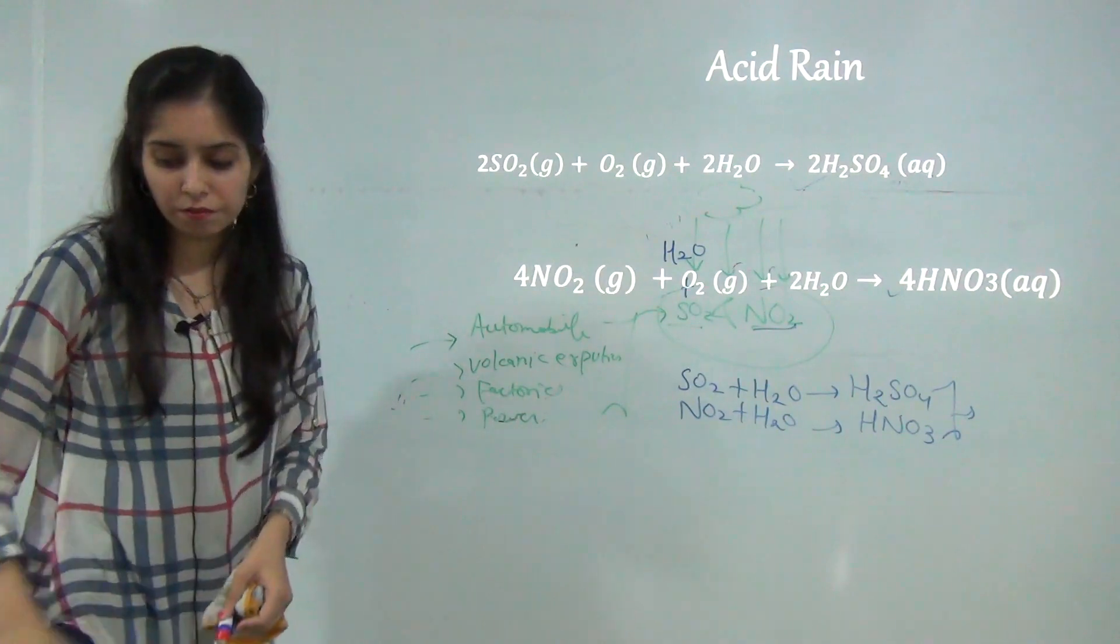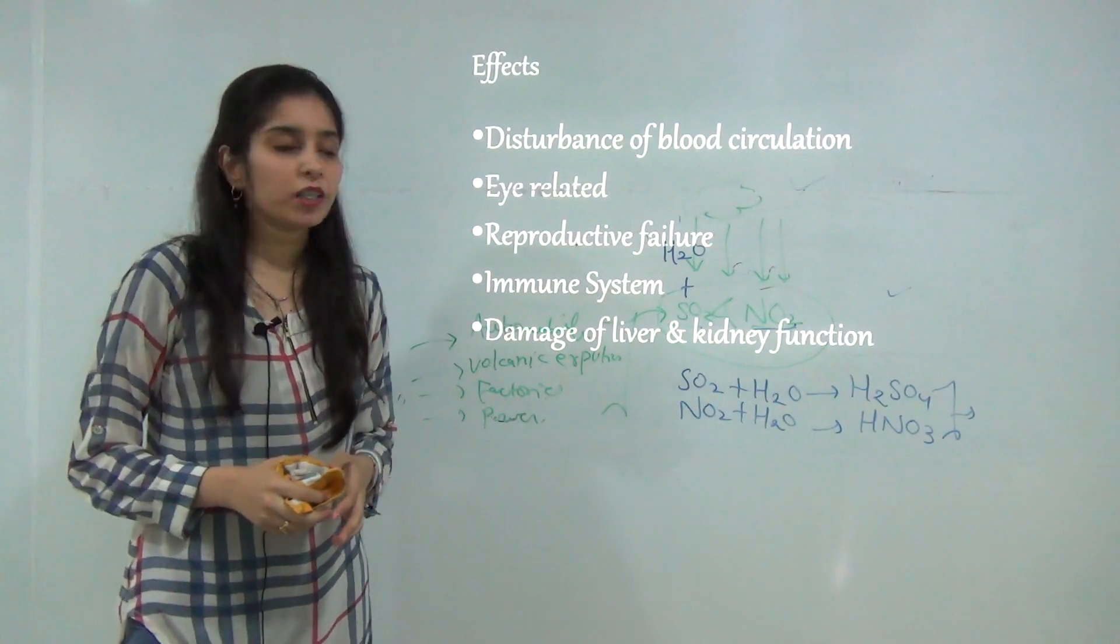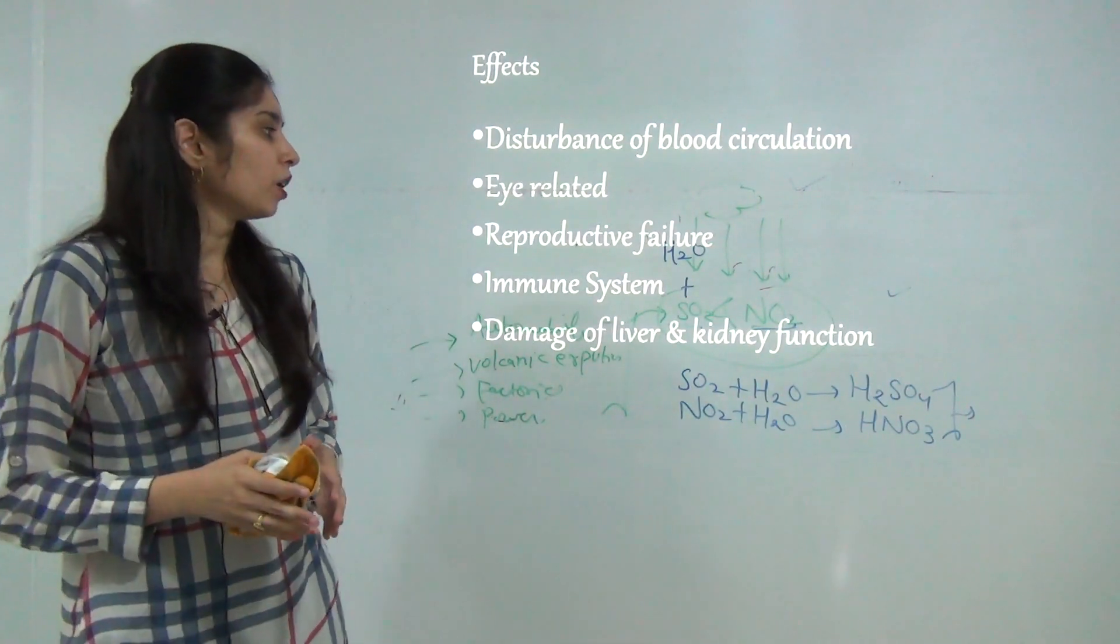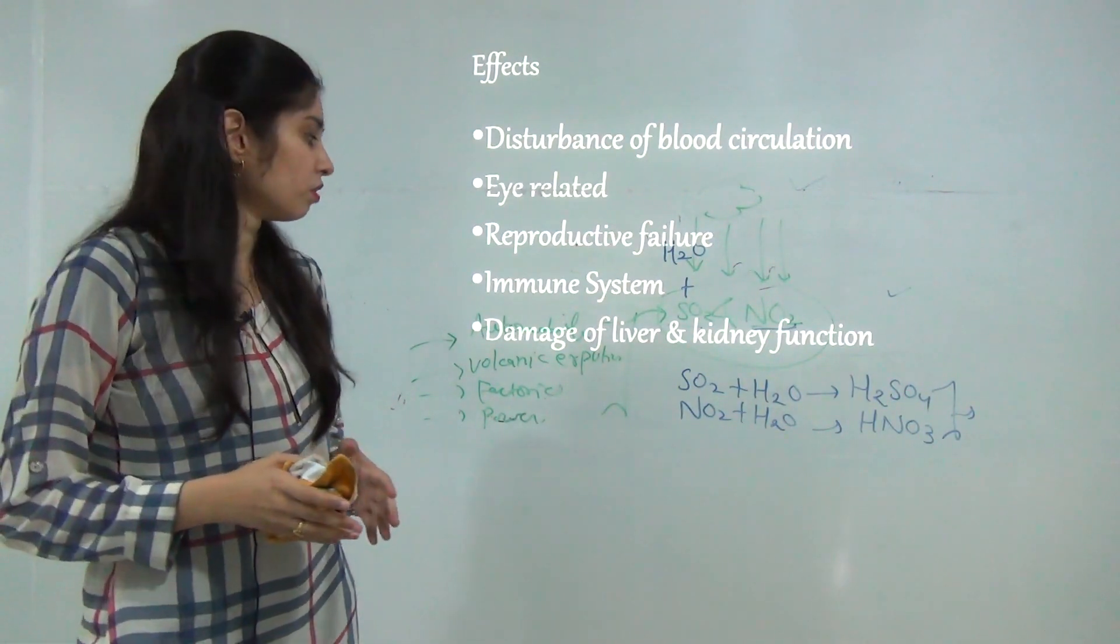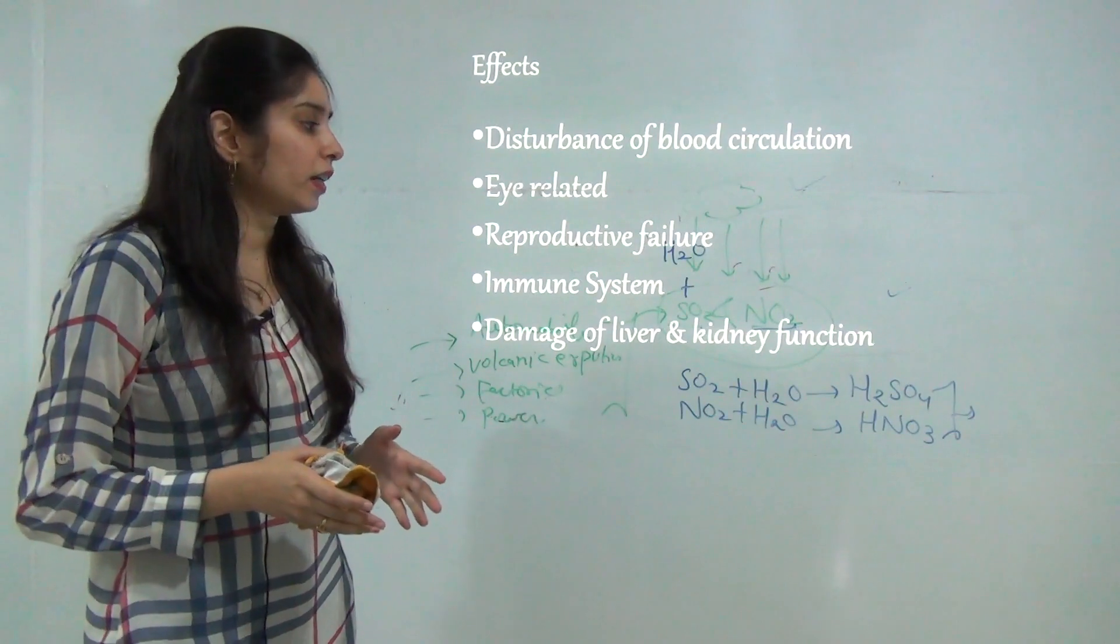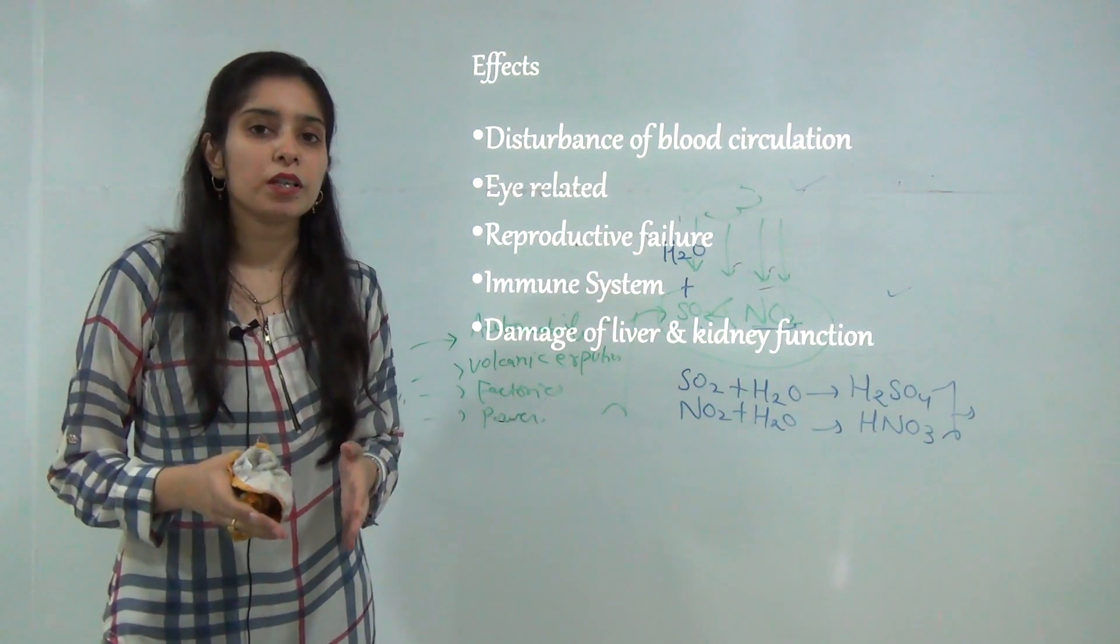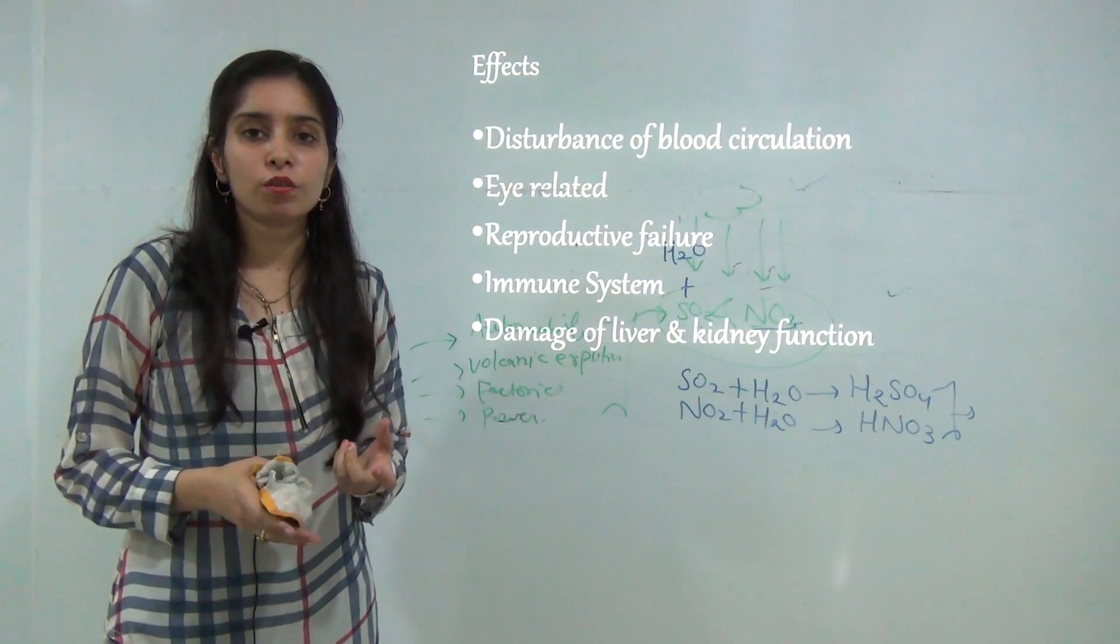The main effects of acid rain and sulfur are as follows: it can disturb the blood circulation process, eye related problems, eye irritation can cause, reproductive failure can cause, it damages our immune system and damage of liver and kidney functions, and many buildings and monuments are also damaged by acid rain and it is also called stone cancer.